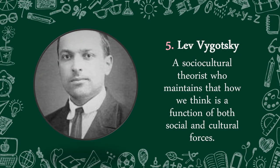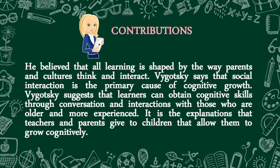Our fifth Theorist is Lev Vygotsky. He is a social-cultural theorist who maintains that how we think is a function of both social and cultural forces. He believed that all learning is shaped by the way parents and cultures think and interact. Vygotsky says that social interaction is a primary cause of cognitive growth. He suggests that learners can obtain cognitive skills from conversation and interaction with those who are older and more experienced, through the explanations that teachers and parents give to children.